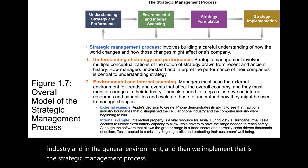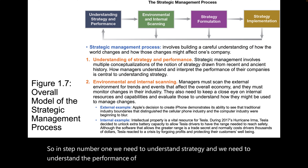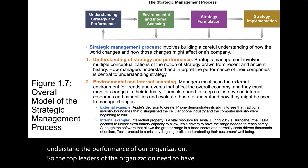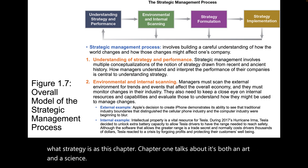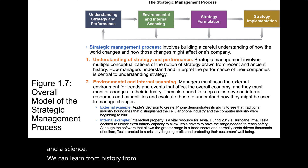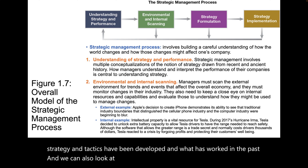In step number one, we need to understand strategy and we need to understand the performance of our organization. The top leaders of the organization need to have an understanding of what strategy is. As chapter one talks about, it's both an art and a science. We can learn from history — from war history, from ancient history — of how strategy and tactics have been developed and what has worked in the past.